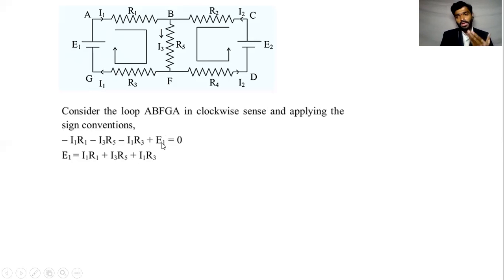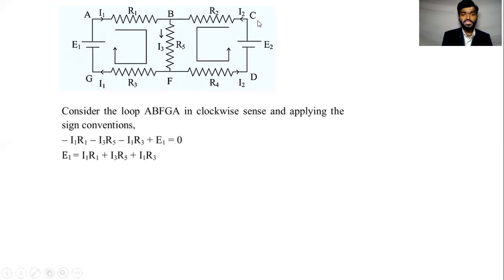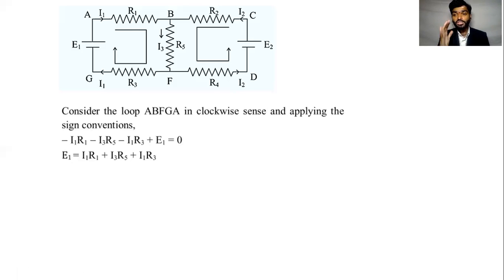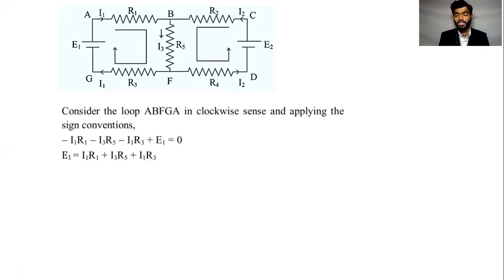When we consider loop BCDFB, our loop direction and current are opposite, so here the sign will be positive — plus I2 R2. The current sign is positive, and the negative sign terms get shifted to the other side, giving us E1 for the first loop equation. The second loop follows the same method. We will complete our 12th state board syllabus in this simple way. Thank you.